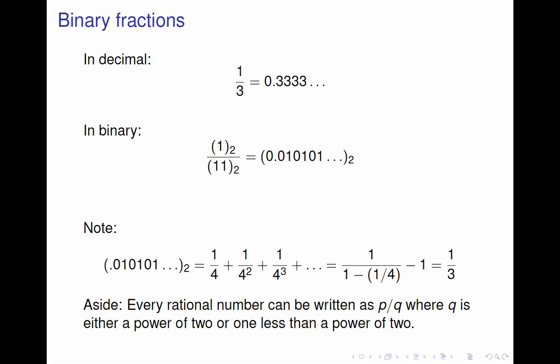You might remember from grade school that you can write numbers like a third as 0.33333 repeating, and that for any rational number, a number that can be written as p over q where p and q are integers, we can either write down the number as a finite decimal fraction, like 1/4 = 0.25, or we can write it down as an infinitely repeating decimal fraction.